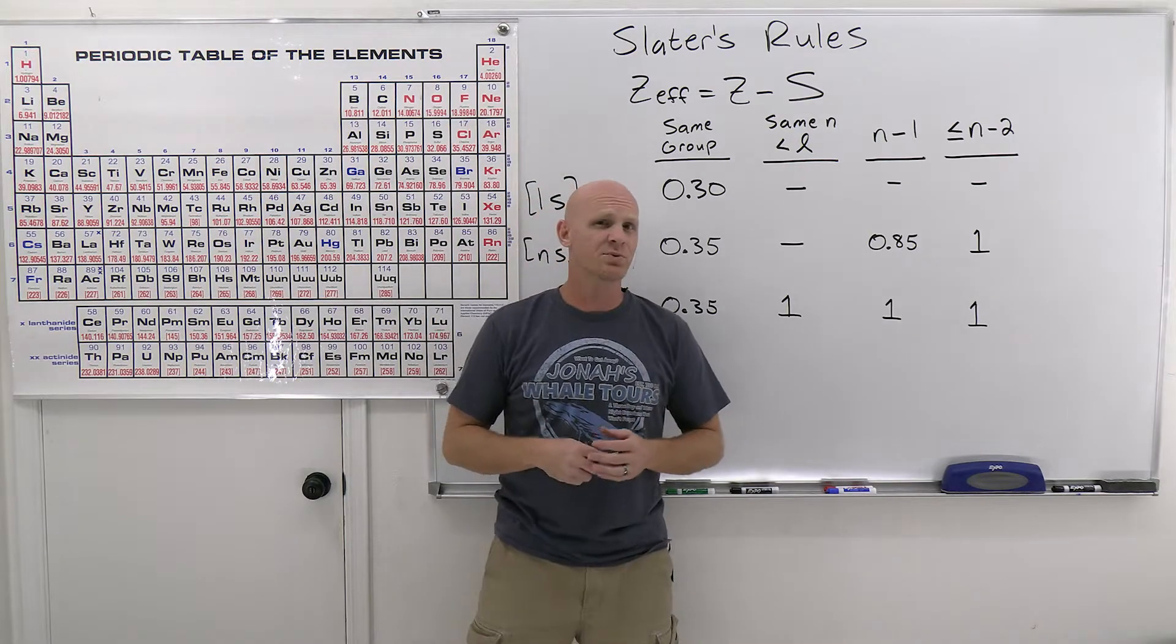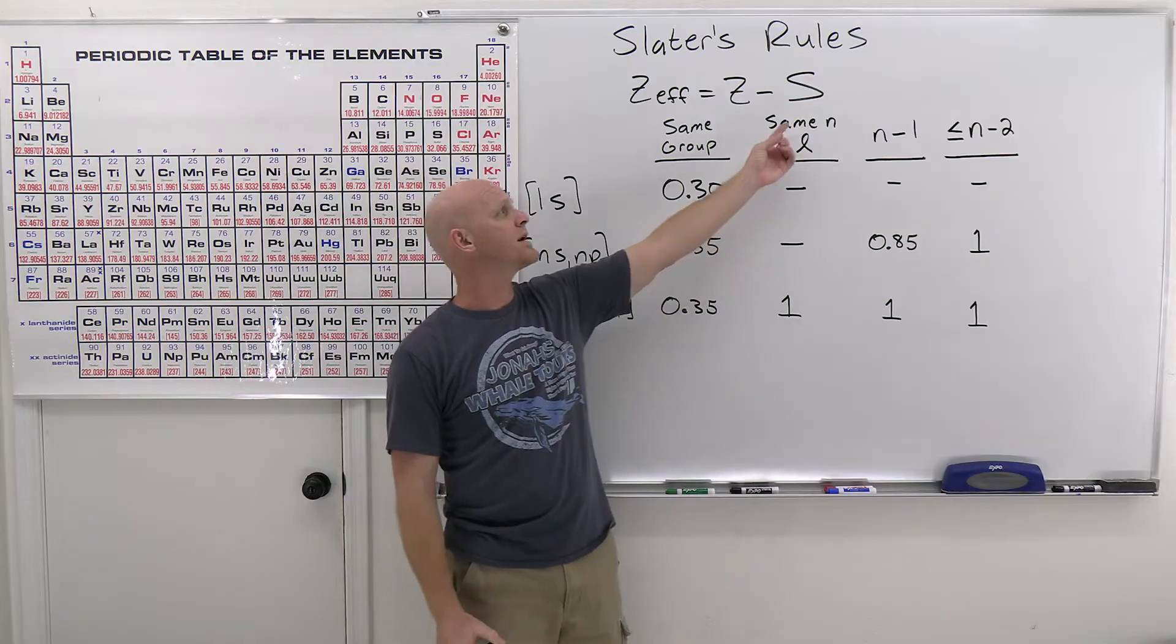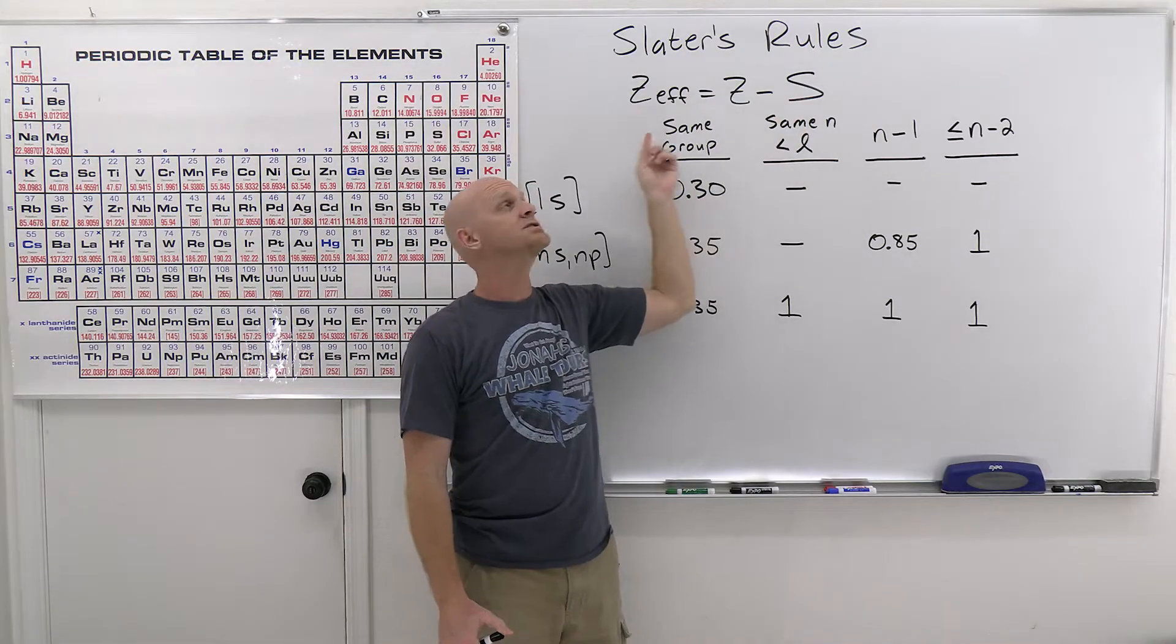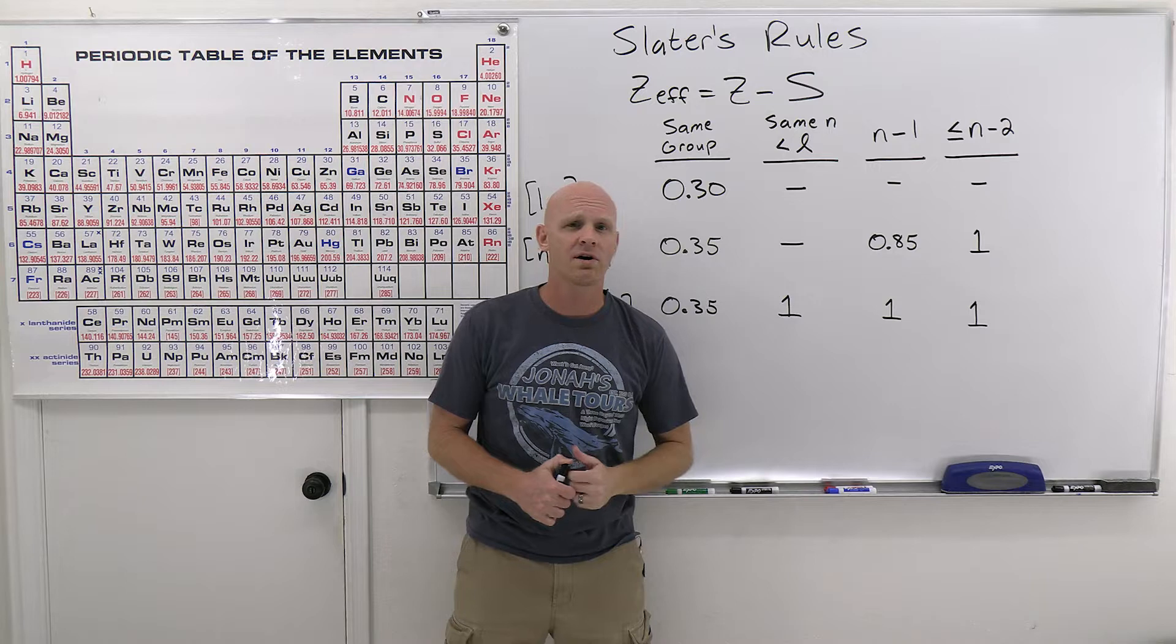So let's dive into Slater's rules here. Slater's rules are going to get you a better approximation of the screening constant, so you can get a better approximation of the effective nuclear charge.